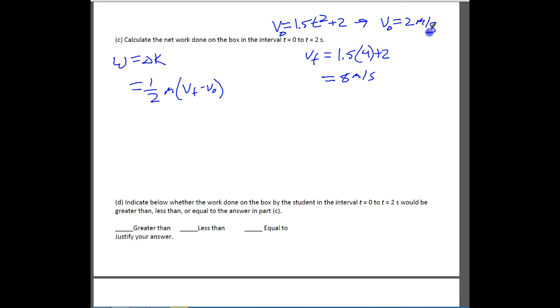So now we have two speeds that we can plug in. We've got our final velocity and our original velocity. So this is going to be one half of 100 times our final velocity, which is 8 squared, because this whole thing is squared, minus, and then we have 2 squared. And if you go ahead and do that math, you should get 3,000 joules of work is done. Because remember work is just changing kinetic energy and that's what we solve for.